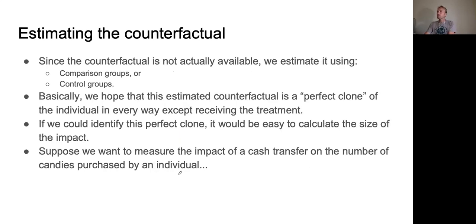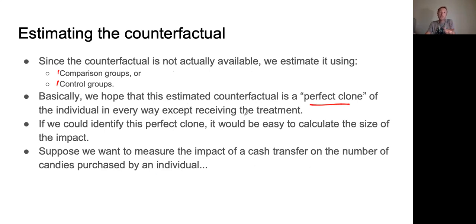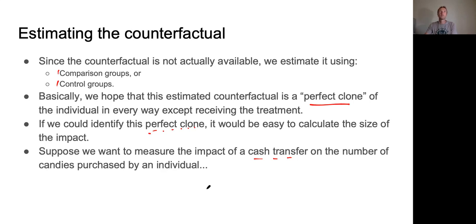Here's how you estimate it: you use a comparison group or a control group. Basically, you want two people that are perfect clones of each other — one gets the treatment, one doesn't, and then you look at the difference. Any difference between the two is directly attributable to having received the treatment. If we could identify a perfect clone, it'd be easy to calculate the size of the impact. Let's pretend every individual has a perfect clone. Suppose we want to measure the impact of a cash transfer — a popular development intervention — on the number of candies purchased by an individual.